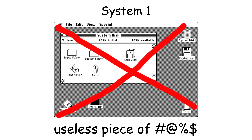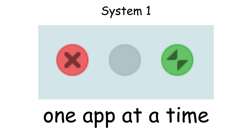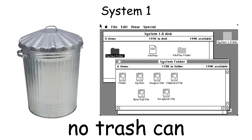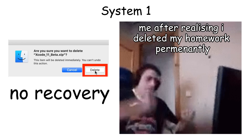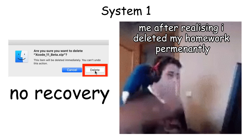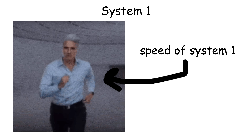However, System 1 had serious limitations. It could only run one program at a time, meaning you had to close one application before opening another. It also didn't have a trash can yet, so deleting files was permanent with no recovery option. The Macintosh only had 128 kilobytes of RAM, which made everything run slowly.